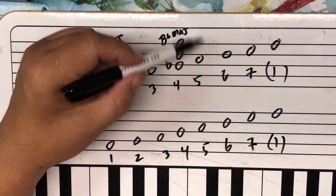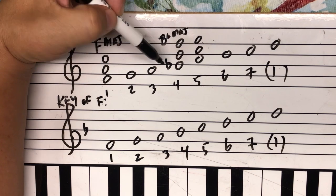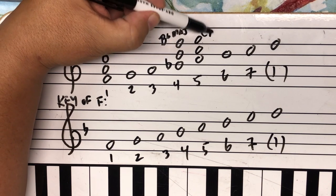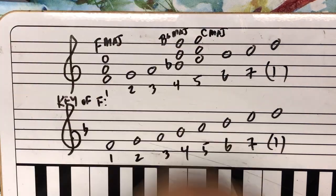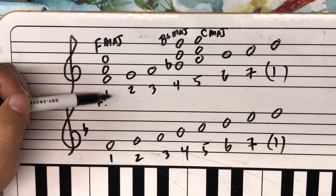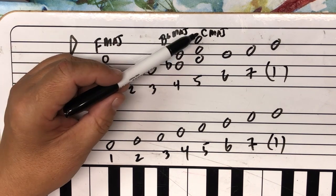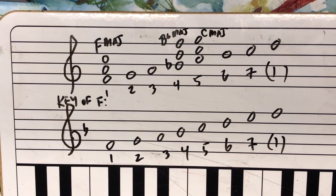And then if I was building on this right here, I would go C, E, G, and that would be a C major triad right there. And we call the chord built on the first scale degree, the one chord. And this is the four chord because it's built on the fourth scale degree. And this is the five chord.